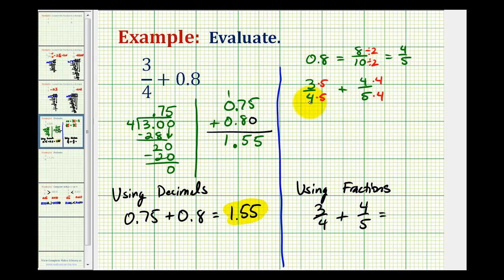Notice by doing this, we have a common denominator of twenty. We would have fifteen-twentieths plus sixteen-twentieths, which would be thirty-one-twentieths, which doesn't simplify, so this would be our sum as an improper fraction.